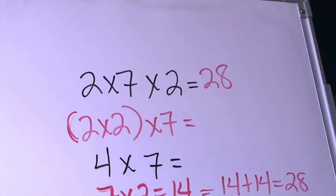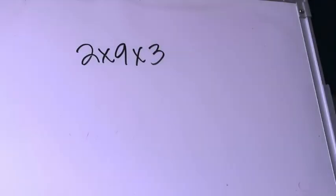We'll do one more example. Alright, we have another example, 2×9×3. Again, in this one, they haven't grouped it for us. They're leaving it up to us.